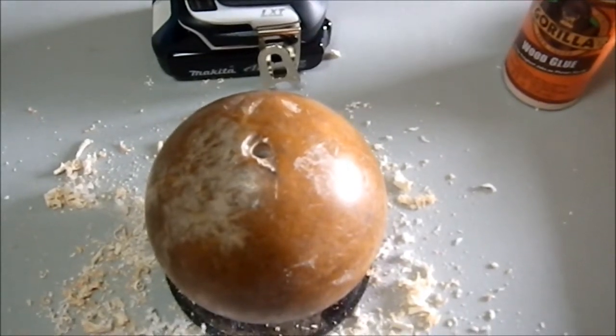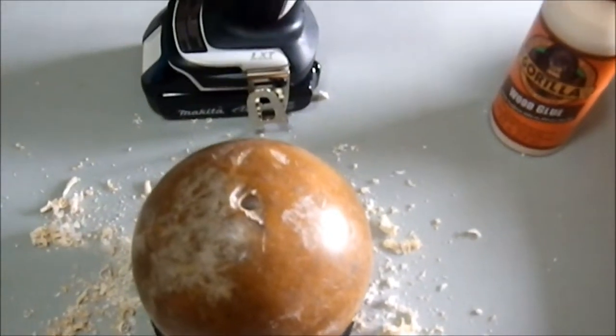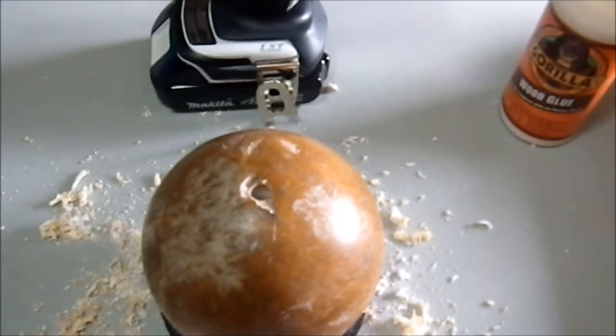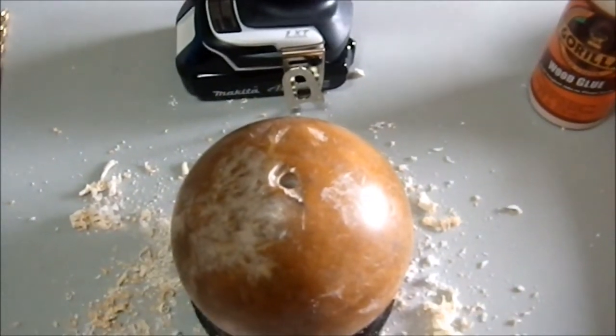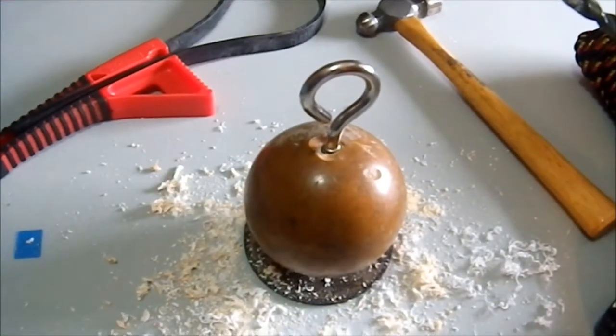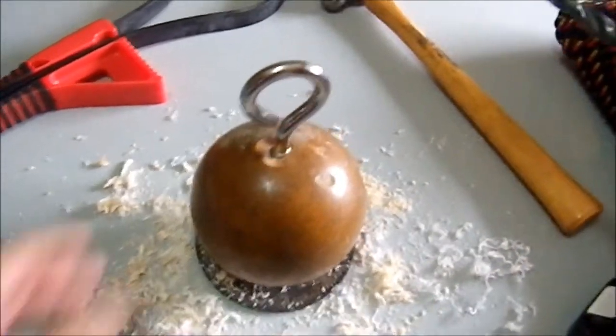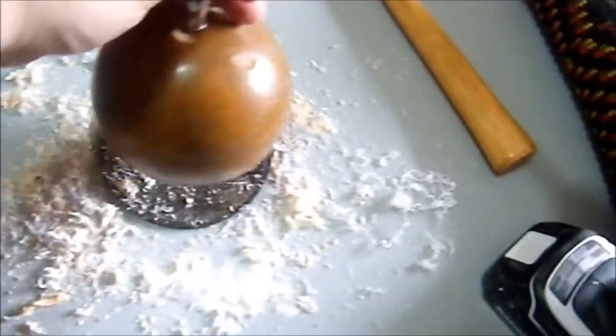So next up is going to be putting in a little wood glue in there to act as lubricant, and then to start tightening this thing down. All righty, the eye bolt is in, and that's about as far as it's going to go, and I'm happy with that.